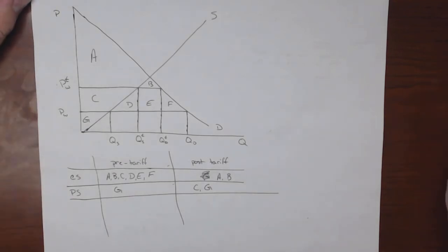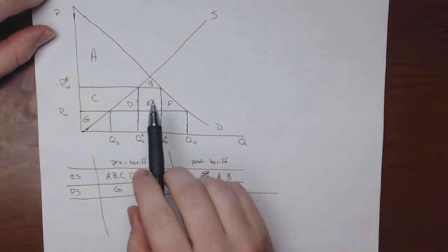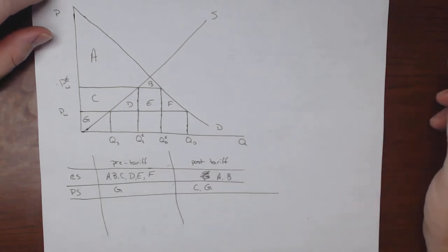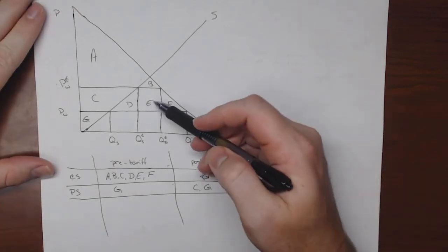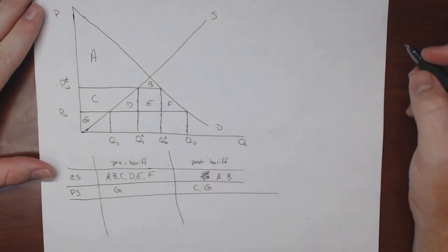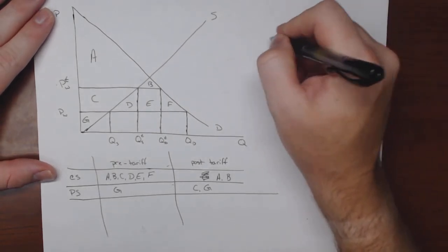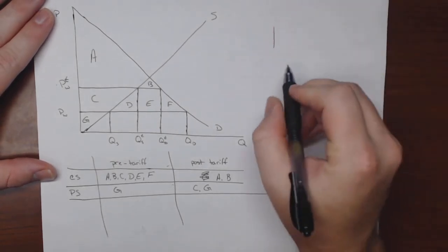Now the question becomes, what happens to D, E, and F? There's not going to be consumer surplus and they're not producer surplus. So what are they? So let's think about what this shape E represents. So notice that E is a rectangle of some sort.